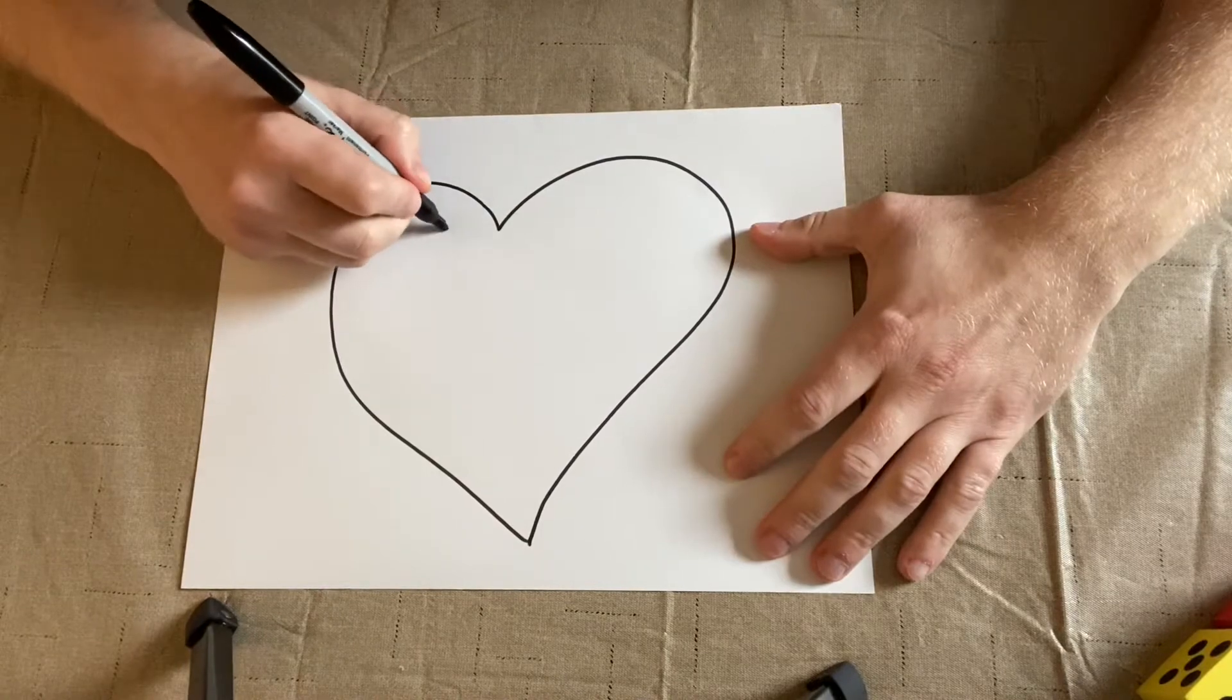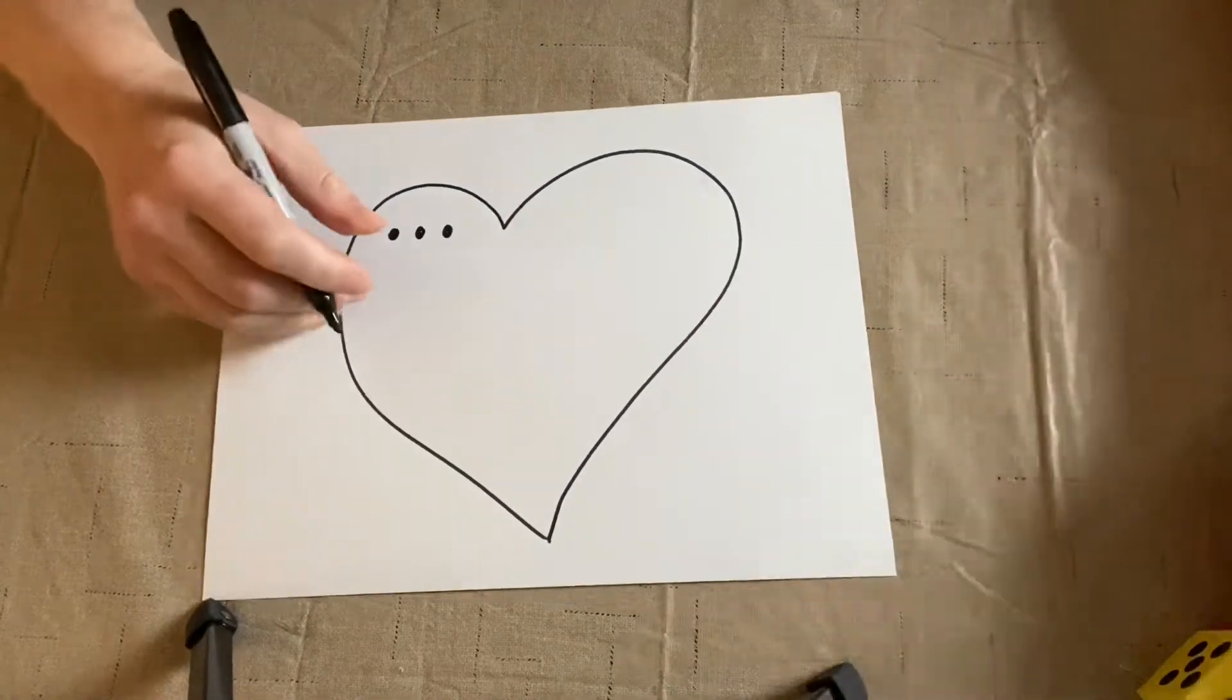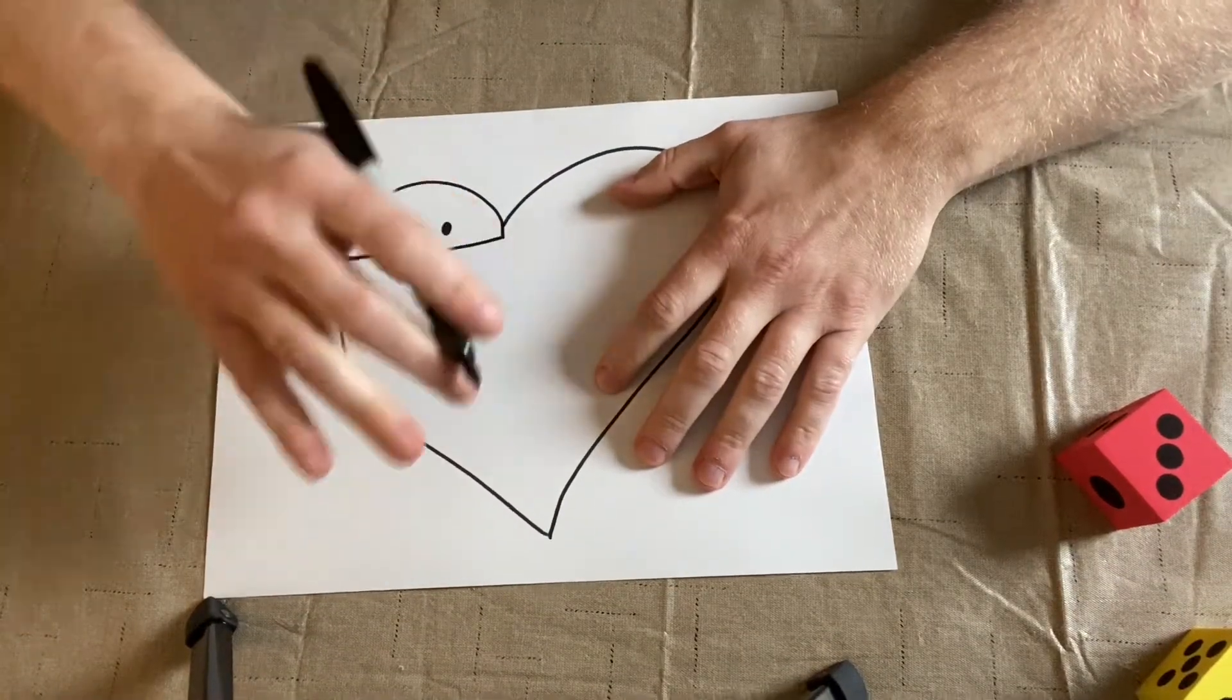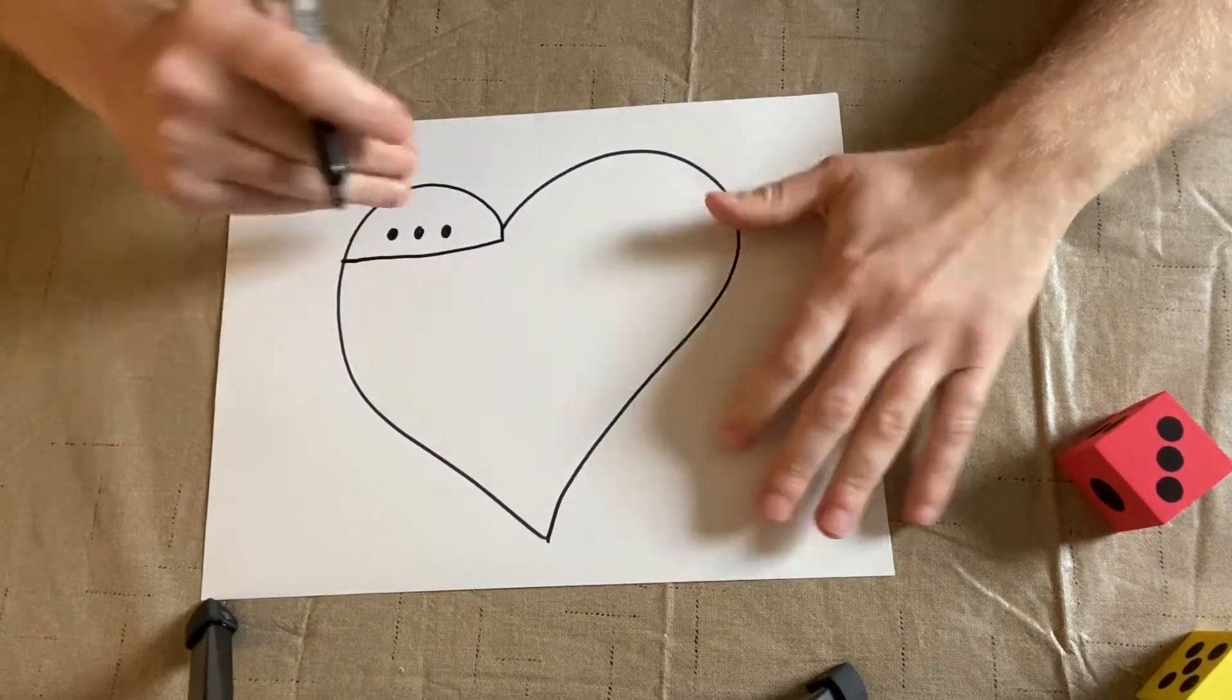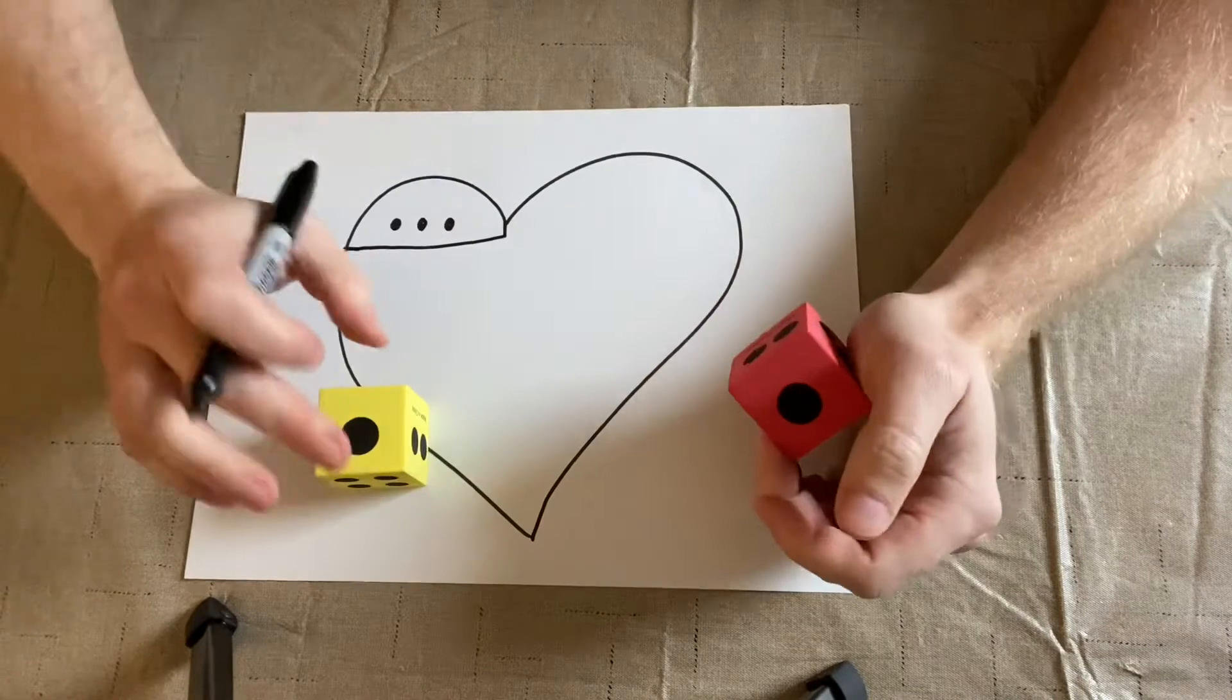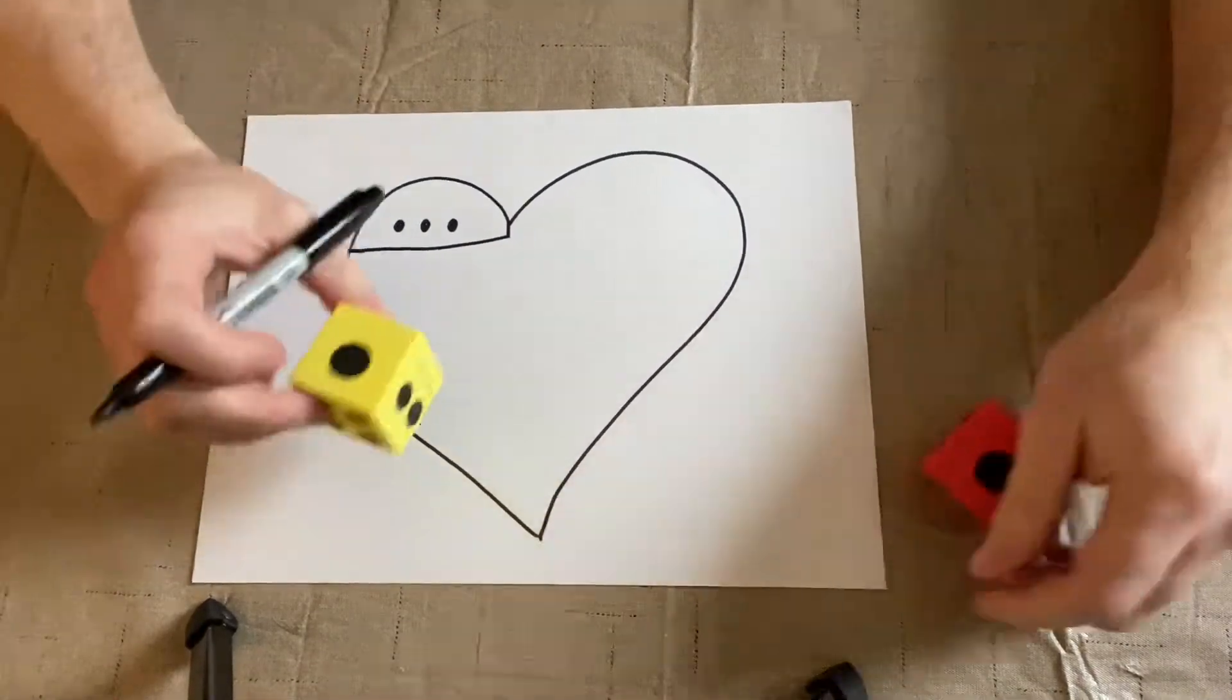So I can put three dots for the number three - one, two, three, three dots - and I can box it out. And what we're going to do is we're going to fill in the heart with the dots from the dice. And then the children would roll the die and color in whatever dot that they have. They'd count and then color.